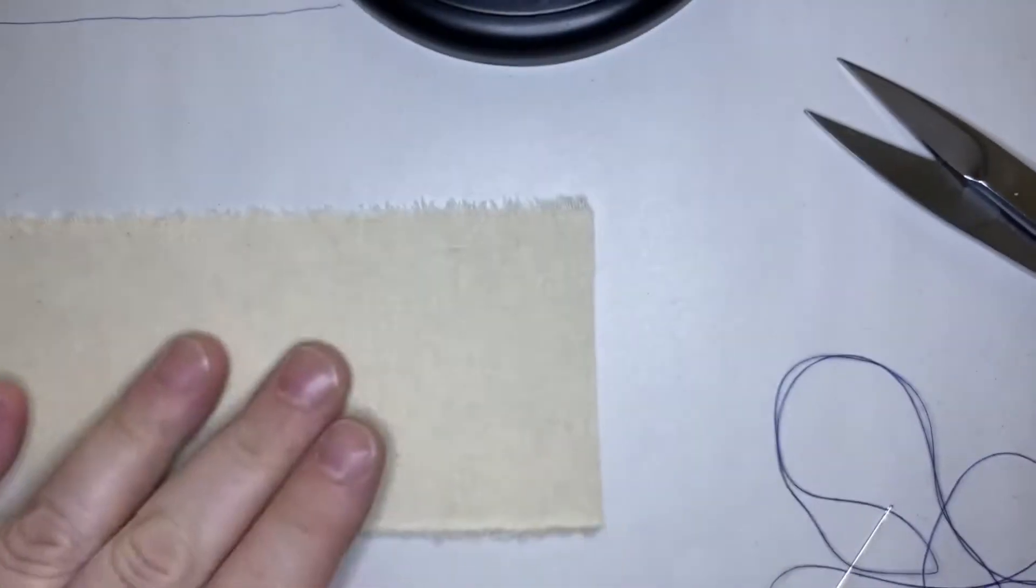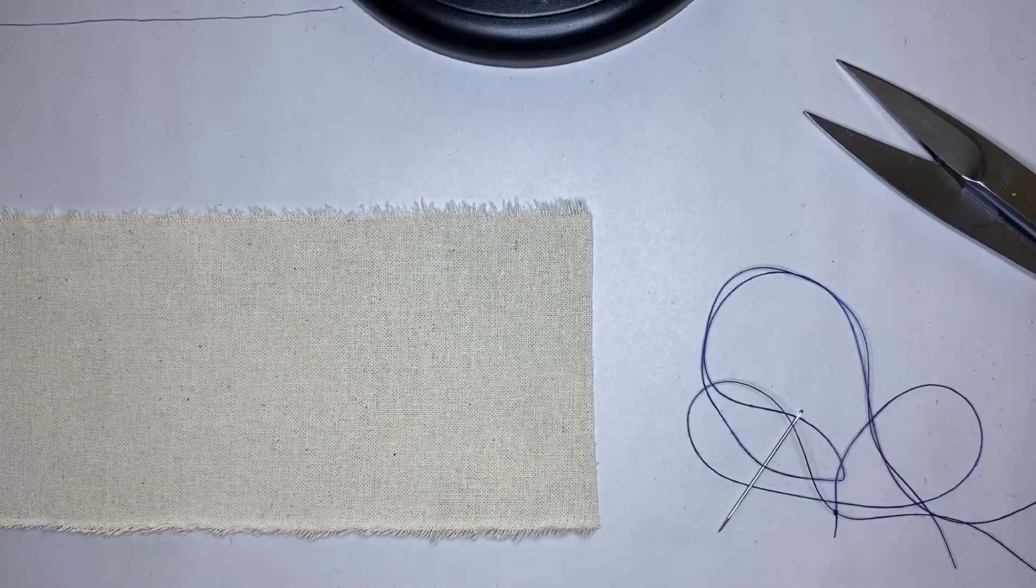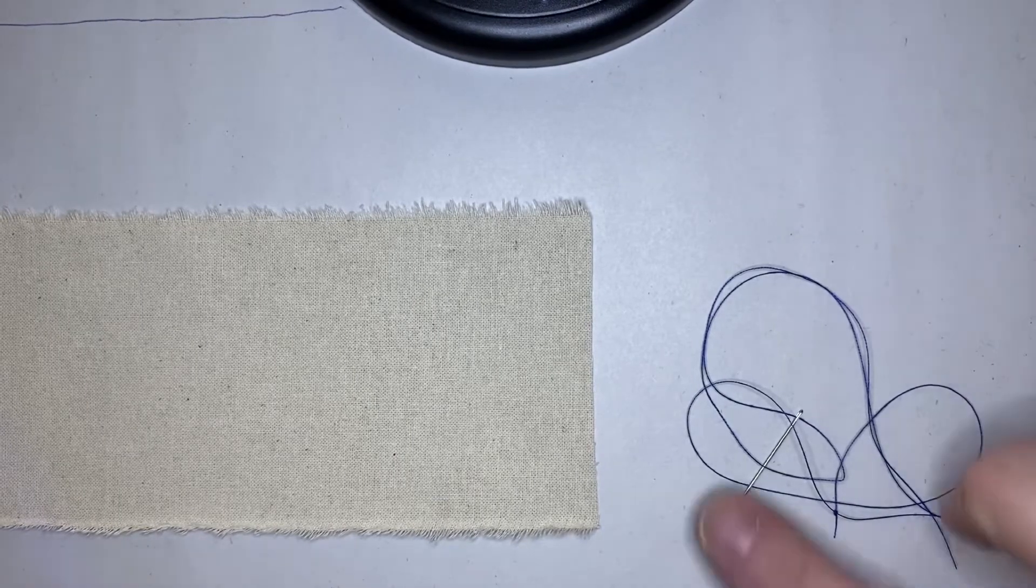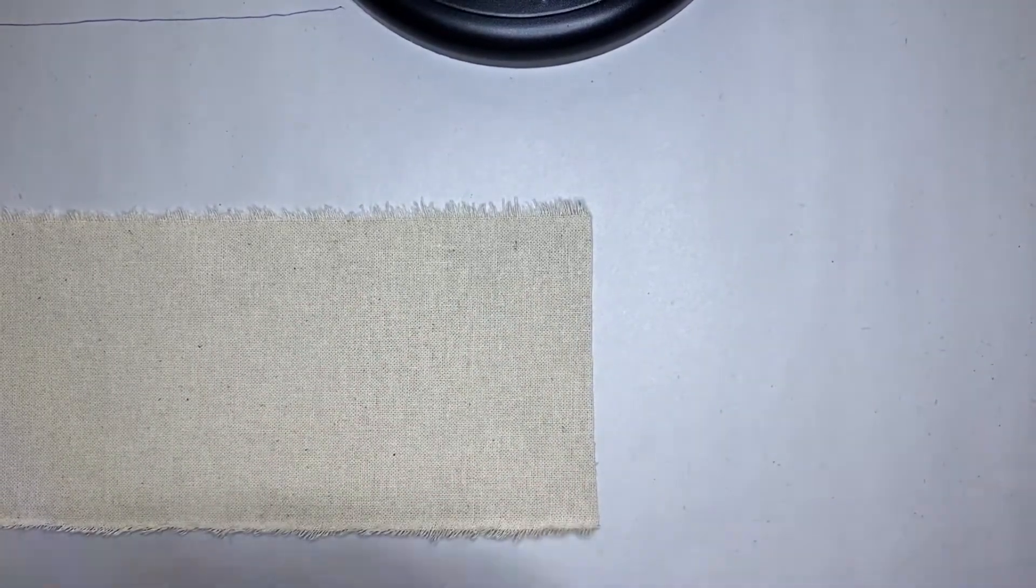For the sample you'll need one piece of muslin, a threaded needle, and some snips. Snips will come in last, thread a needle, and ready to go. We don't have to do any prep for this one.